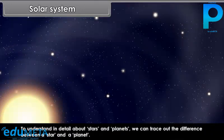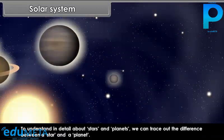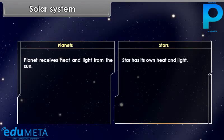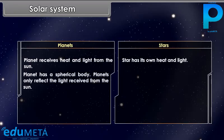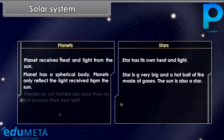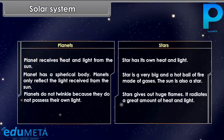To understand in detail about stars and planets, we can trace out the difference between a star and a planet. A planet receives heat and light from the sun, while a star has its own heat and light. A planet has a spherical body and only reflects the light received from the sun. Planets do not twinkle because they do not possess their own light.